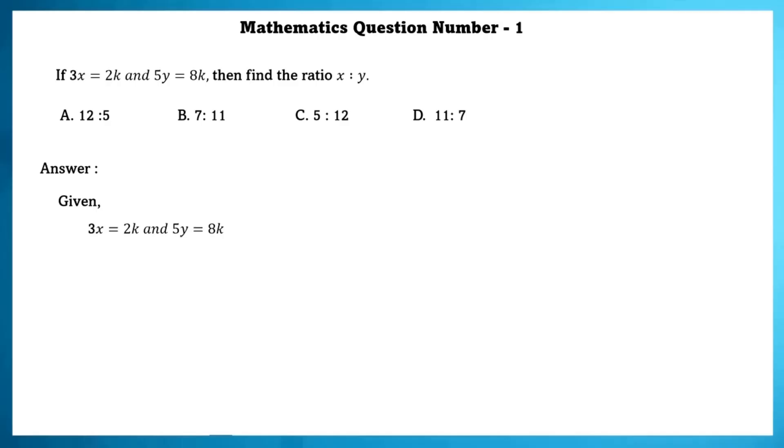Given 3x is equal to 2k and 5y is equal to 8k. So we can write x as 2k by 3 and y as 8k by 5. Now x is to y can be written as x by y.